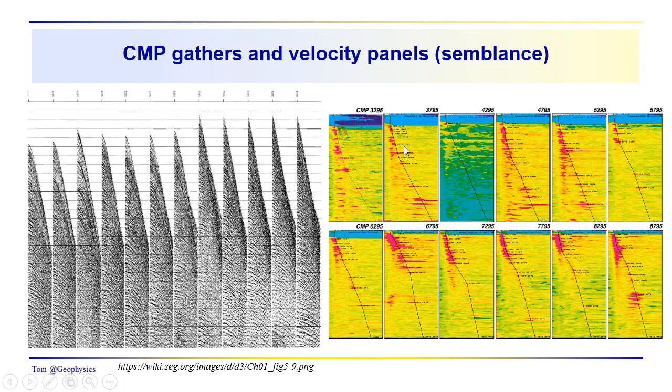On the second gather, again, in the shallow part, they pick around the peak, and then they come on down, and then they're picking in the center of the higher semblance region over here, and so on. So this is an interpretive process.